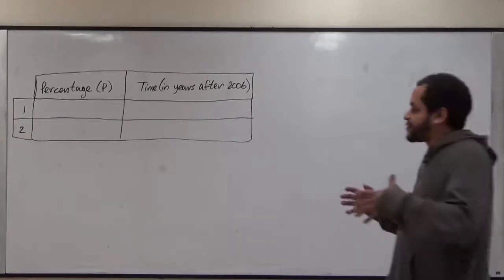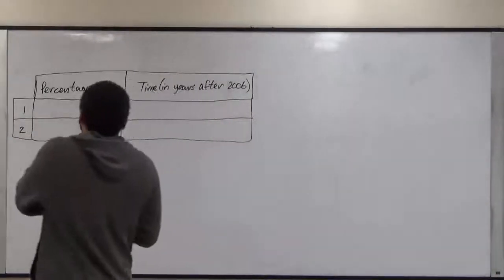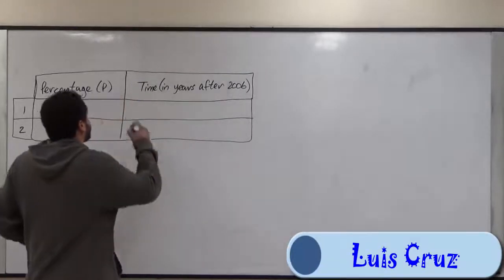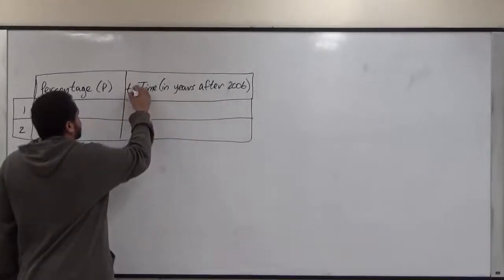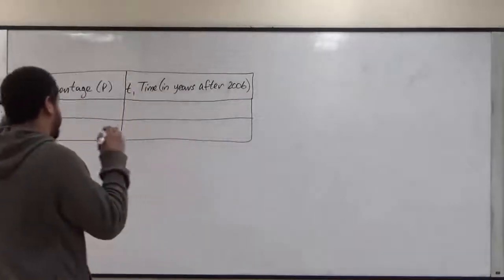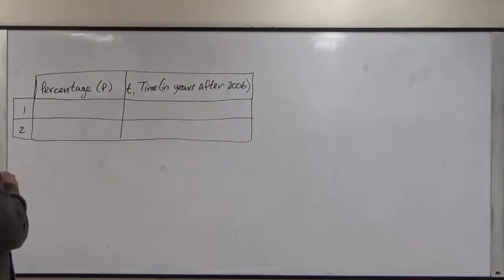We're going to use a table to solve this problem where P represents the percentage and T is the time in years after the year 2006. Because we're doing a linear model to represent this equation,